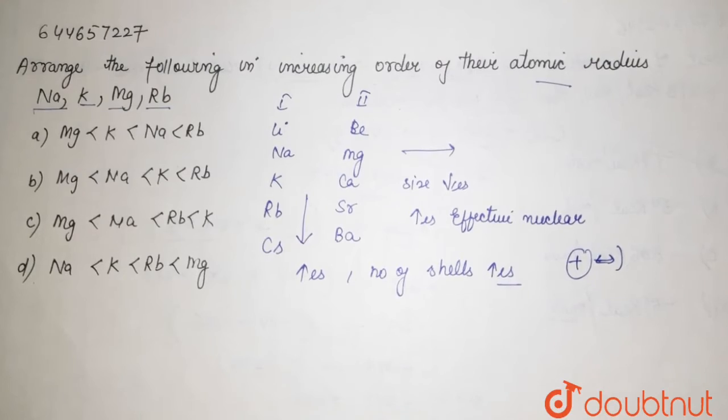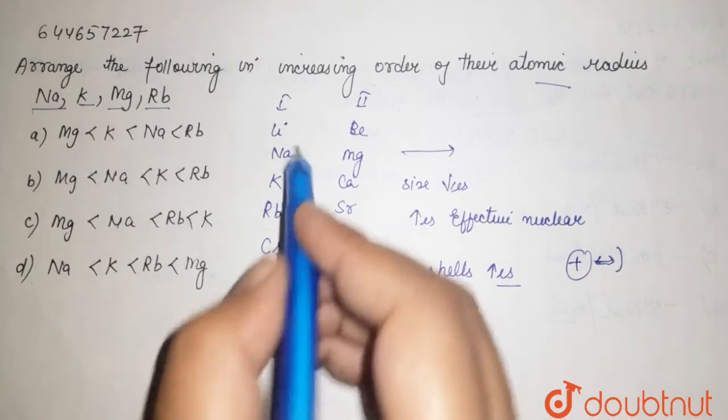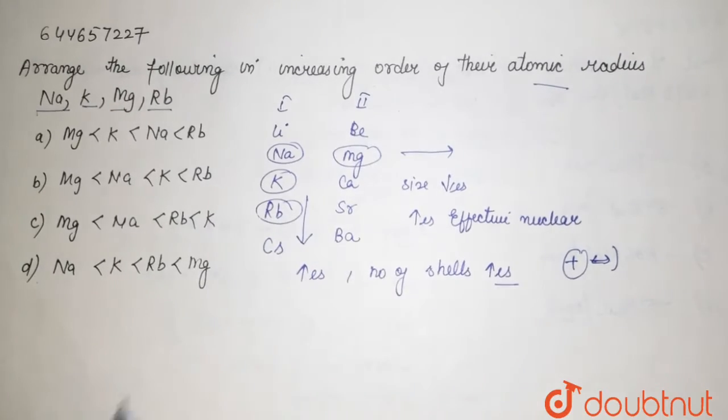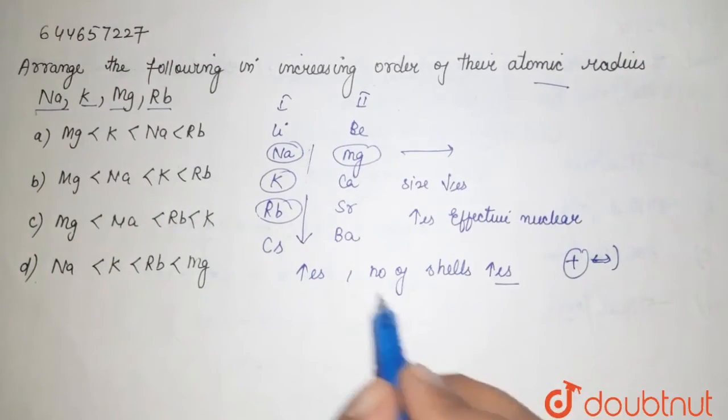So if you see the position here - here it is your sodium, here it is your potassium, magnesium, and this is your rubidium. If you see here, down the group your size increases.